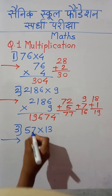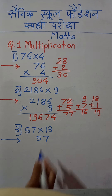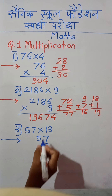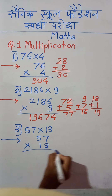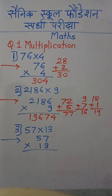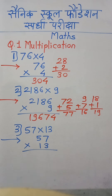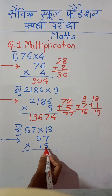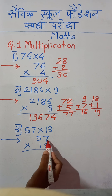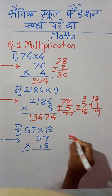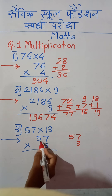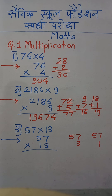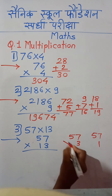Here we have a 2-digit number multiplied by a 2-digit number. We write this example vertically: 57, then write 13 with 3 at units place below 7 and 1 below 5. Give the sign of multiplication. Because we have a 2-digit number, we will multiply the complete number 57 by 13 — first by units place digit 3, then by tens place digit 1.